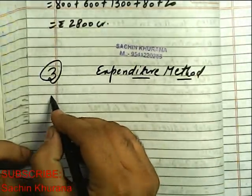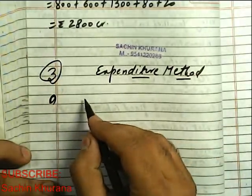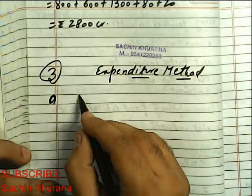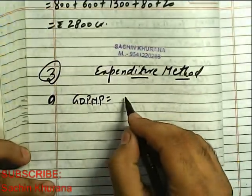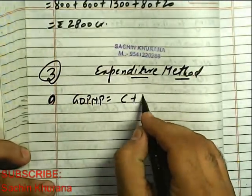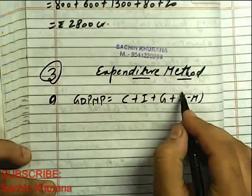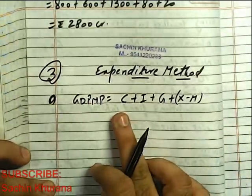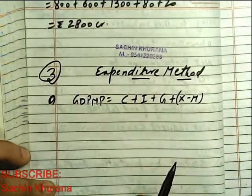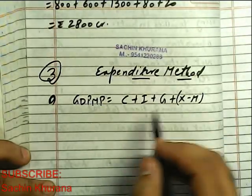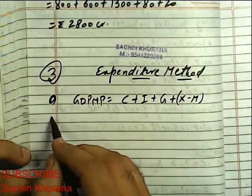Let us first take an overview. To calculate GDPMP from this method, we use this formula or equation: C + I + G + X - M. Now let us discuss these components.